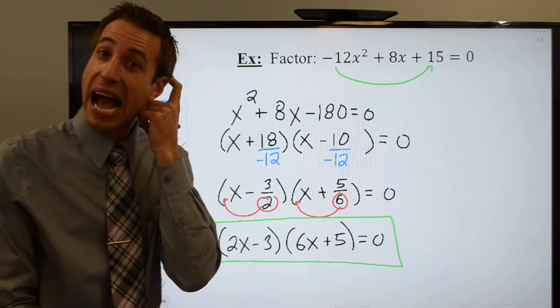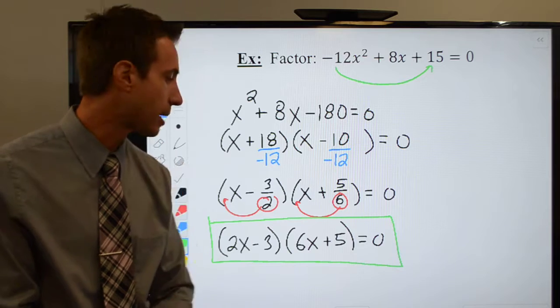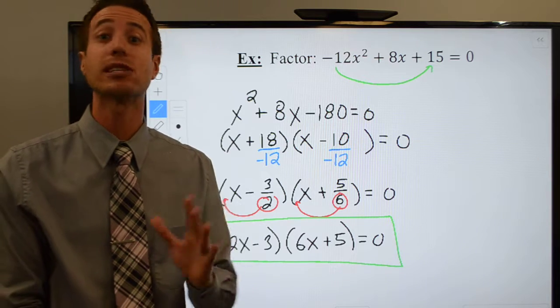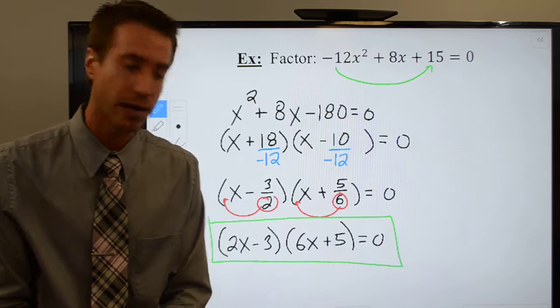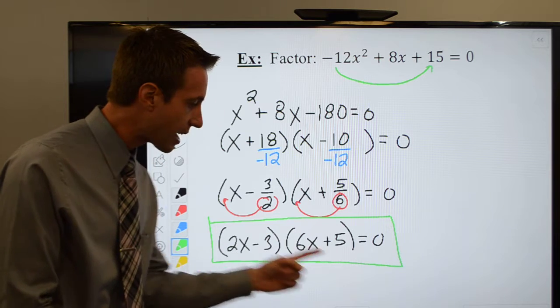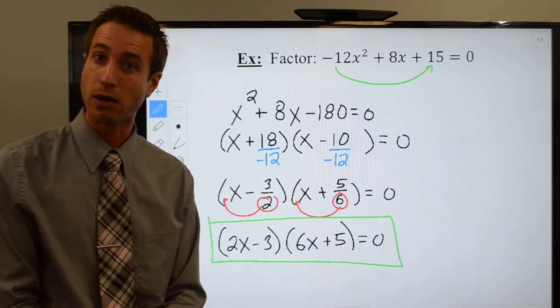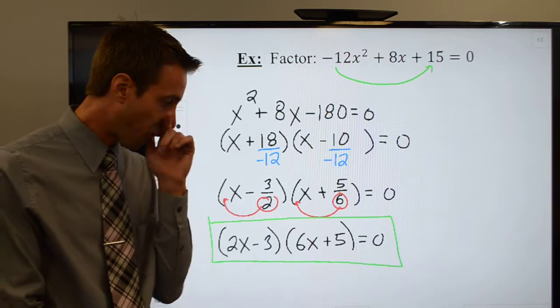2x minus 3 and 6x plus 5 equal to 0. And I have got my factors. Once again, if I had asked you to solve, I've said this a few times, but if I had asked you to solve, you would then just simply use this zero product property to split these guys up, set them both equal to 0, and solve for x.